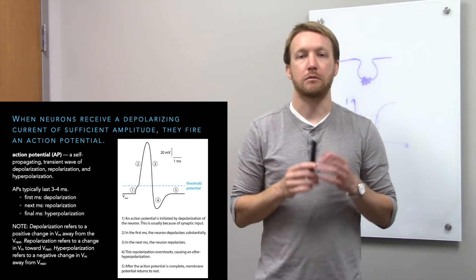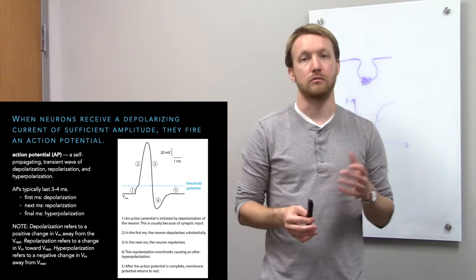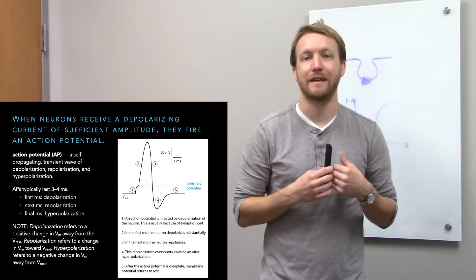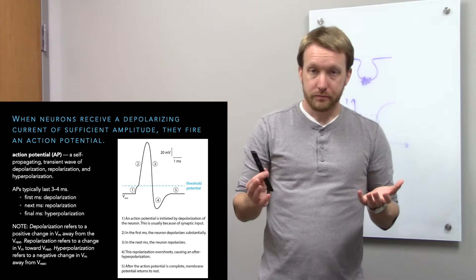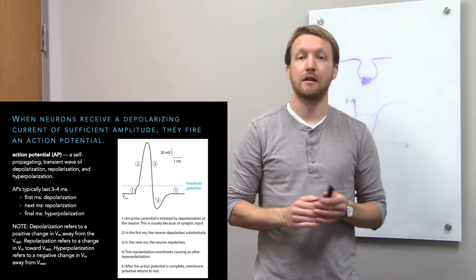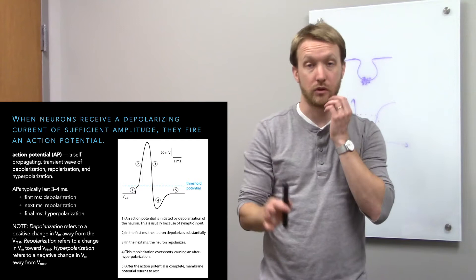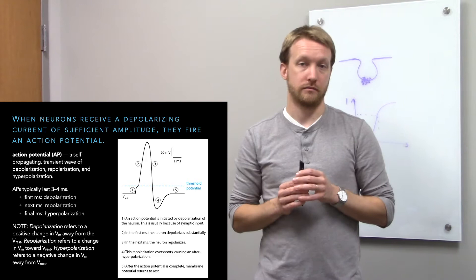All we need is a little bit of depolarization to get it started. Depolarization means removing the membrane potential — making it less negative. Cells rest at minus 70, so depolarizing makes them less negative. We apply depolarization to any positive movement of the membrane potential. Repolarization is going back toward rest, and after hyperpolarization means the cell is more negative than it was at rest.